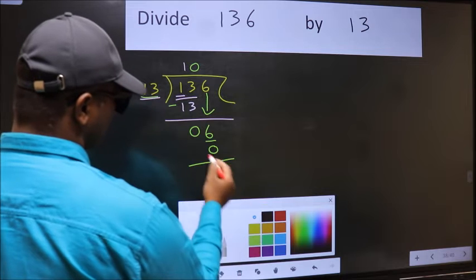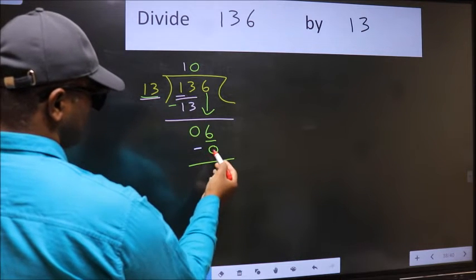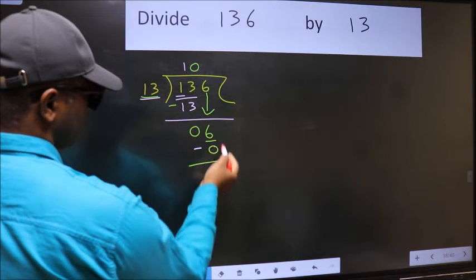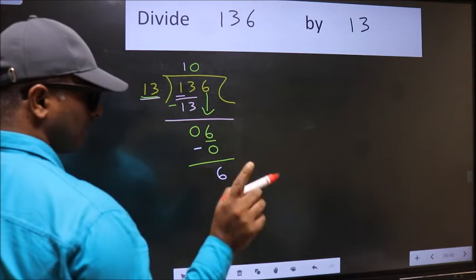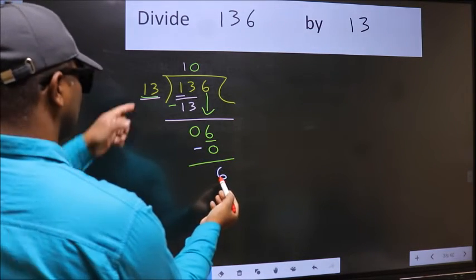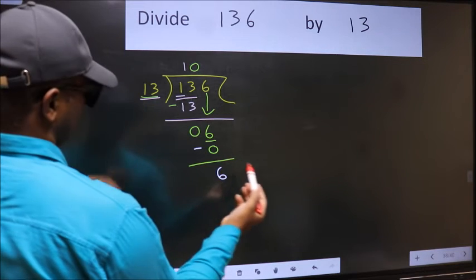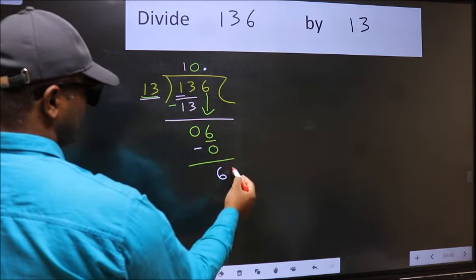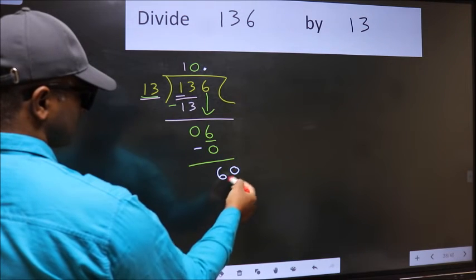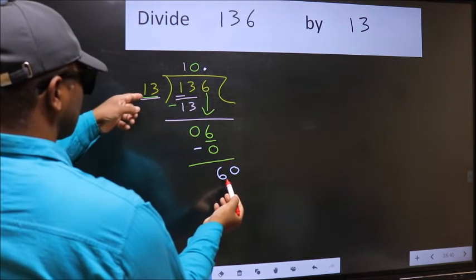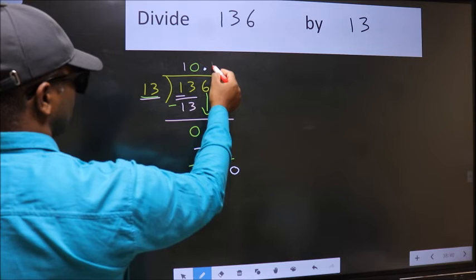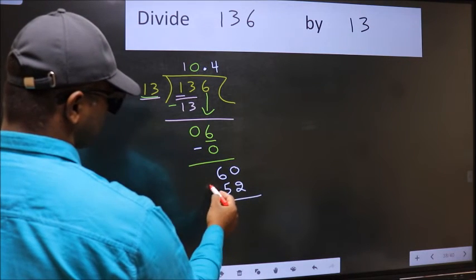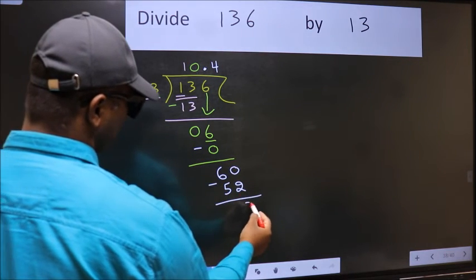Now we should subtract. 6 minus 0 is 6. Over here, we did not bring any number down. And 6 is smaller than 13. So now we can put dot and take 0. So 60. A number close to 60 in the 13 table is 13 fours, 52. Now we should subtract. We get 8.